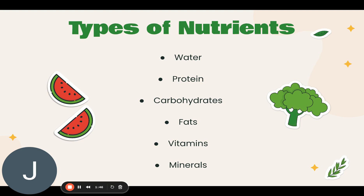Protein is needed for tissue growth and repair. Carbohydrates provide energy and fiber for bowel elimination. Sources of carbohydrates include fruit, vegetables, breads, cereals, and sugar. Dietary fiber is found in plant foods and is not digested — it provides the bulky part of chyme for elimination. Sugars are broken down by the body into glucose, which is then used for energy. If carbohydrates are not used, they turn to fat.